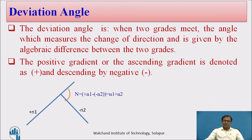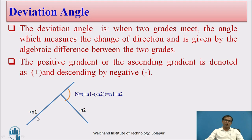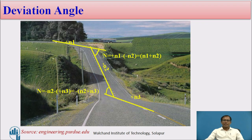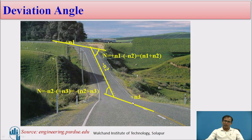Another parameter of the vertical curve is the deviation angle. The deviation angle is where two tangents or two grades meet at a particular location. The angle formed there measures the deviation angle, given by the algebraic sum of the ascending and descending gradients — ascending is positive and descending is negative. For a summit curve: +n1 minus (−n2) gives n1 + n2. For a valley curve: −n2 minus (+n3) gives −(n2 + n3).